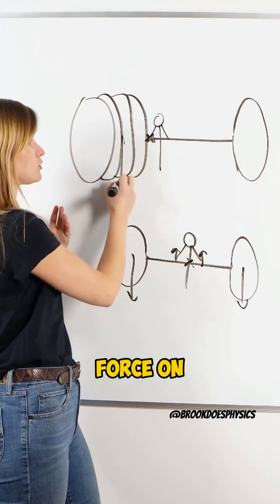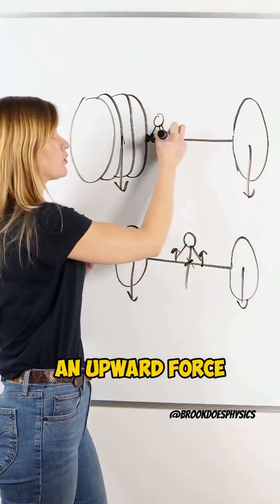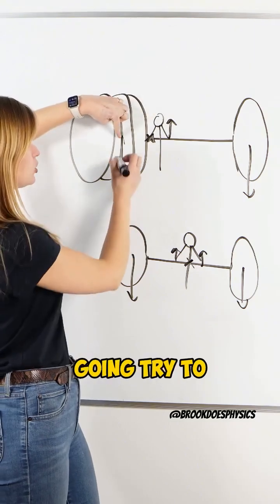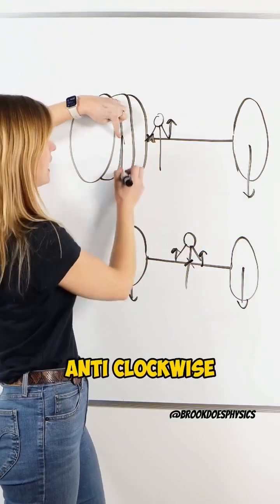So what we have now is we've got our force from our weights, and we have an upward force from that person's other hand. So we can see this weight is going to try to pull it round in an anti-clockwise direction.